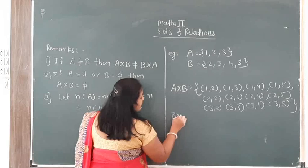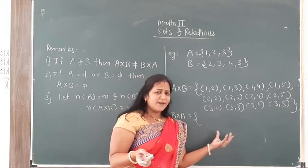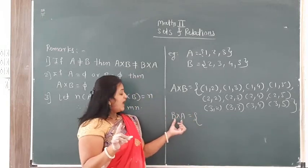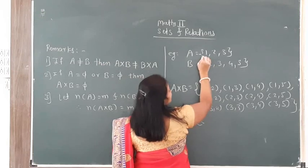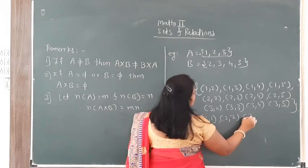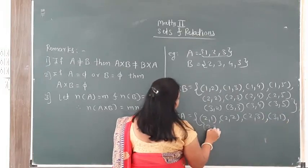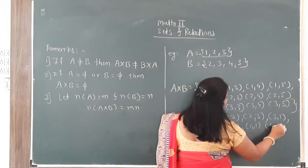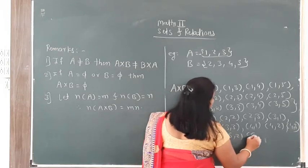Similarly, we find B cross A — all possible ordered pairs where the first component comes from B set and the second component comes from A set. So: (2,1), (2,2), (2,3), (3,1), (3,2), (3,3), (4,1), (4,2), (4,3), (5,1), (5,2), (5,3).